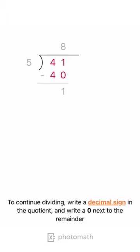To continue dividing, write a decimal sign in the quotient, and write a 0 next to the remainder.